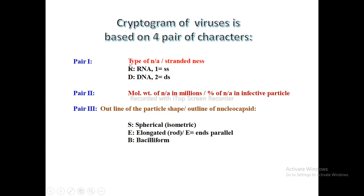Pair 1 tells you about the type of nucleic acid of the virus and the strandedness of that nucleic acid. For example, R is used for RNA genome — if the nucleic acid of the virus is RNA, we use R; if it is DNA, we use D. For strandedness, 1 is used for single-stranded nucleic acid and 2 is used for double-stranded nucleic acid.